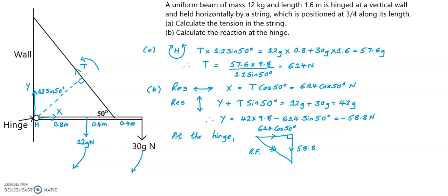So using Pythagoras' theorem, we have the resultant force acting at the hinge equals the square root of 614 cos 50 degrees all squared, plus 58.8 squared, which gives a resultant force acting at the hinge of 399 Newtons.